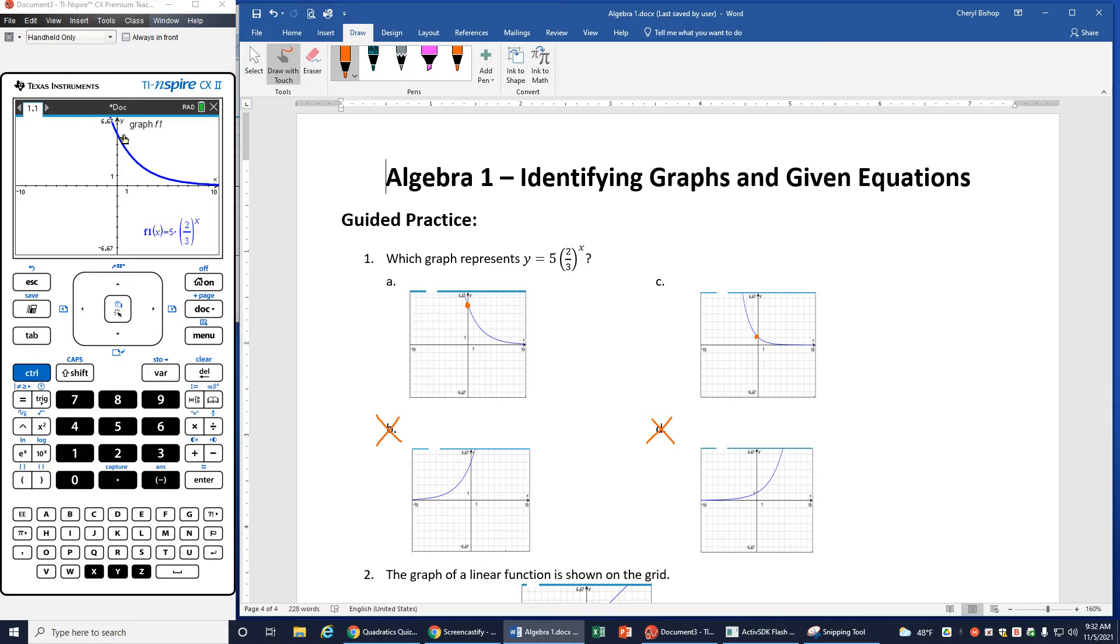So then when I look at my graph over here, 1, 2, 3, 4, 5, I can see that A is going to be my correct answer because it has the correct y intercept, unlike number C, or letter C I suppose. All right, let's go look at our second practice problem.